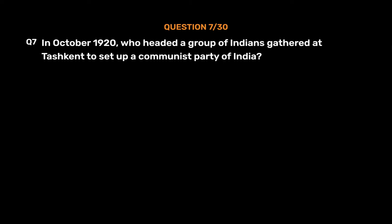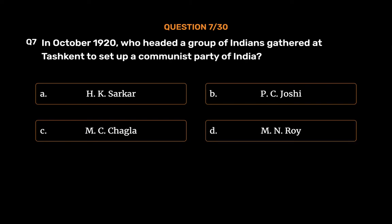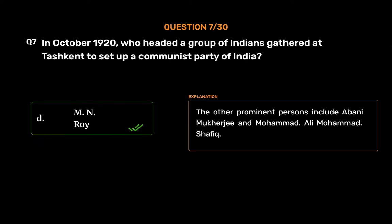Question No. 7. In October 1920, who headed a group of Indians gathered at Tashkent to set up a Communist Party of India? Option A, H.K. Sarkar; Option B, P.C. Joshi; Option C, M.C. Chagala; Option D, M.N. Roy. The correct answer is Option D, M.N. Roy. The other prominent persons include Abni Mukherjee and Mohamed Ali Mohamed Shafiq.